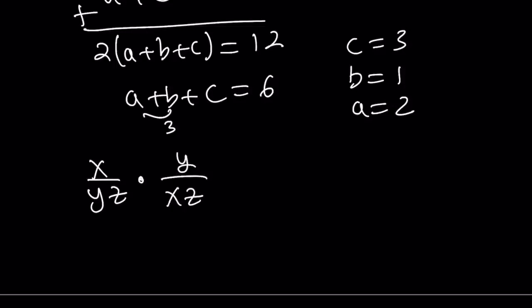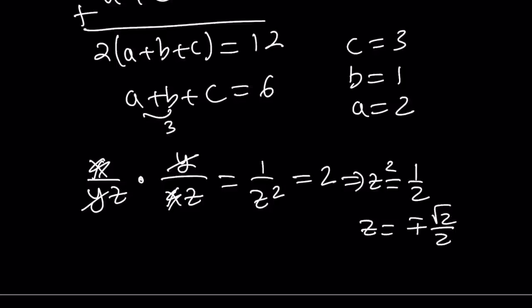Now, notice what happens when you multiply these two things. The Y cancels out, and the X cancels out, and you end up with 1 over Z squared. But notice that X over YZ is A, and Y over XZ is B, and A times B is equal to 2. From here, you get Z squared is equal to 1 half, and Z just becomes plus minus root 2 over 2. It's normally 1 over root 2, but I just rationalized it, and I got root 2 over 2 from here.